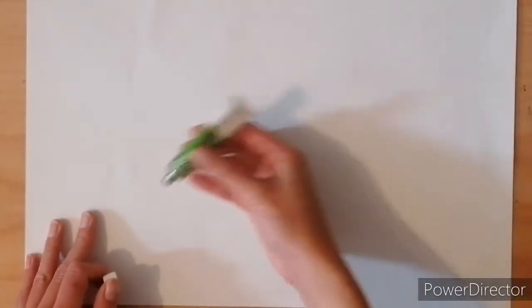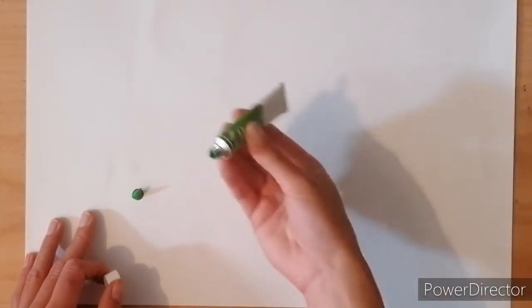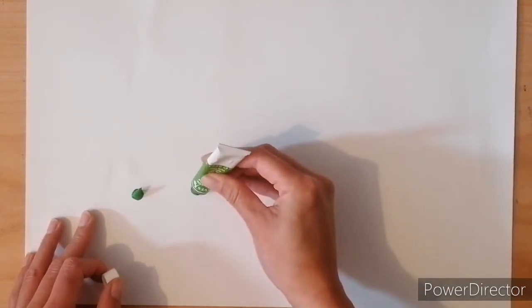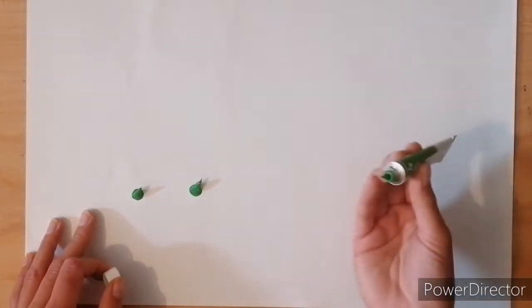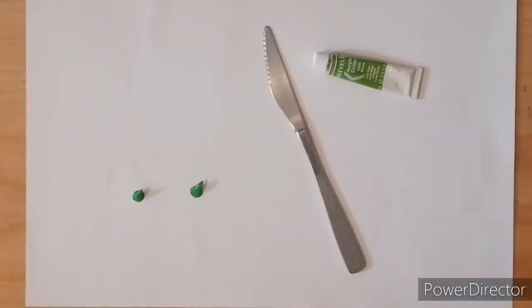Before we start on our main piece, it's always a good idea and always good fun to have a little bit of a practice first. So let's have a practice sheet. This technique relies a lot on just dragging the paint across the surface using different implements and creating different effects. So, for example, we're going to start off showing you a few things that we can do with our knife.